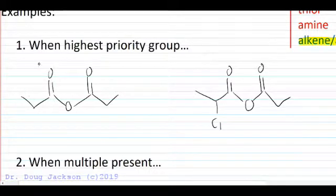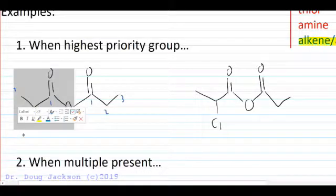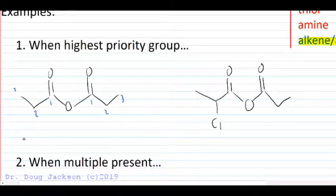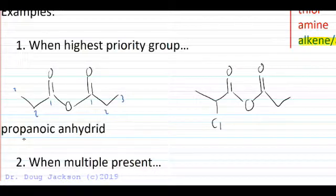So one, two, three on each side - we've got propanoic on either side. So if these were carboxylic acids, they would be named as propanoic acid, but since they are an anhydride and a symmetrical anhydride at that, we will call this propanoic anhydride.